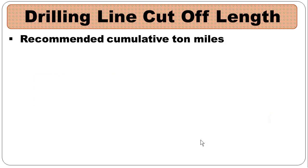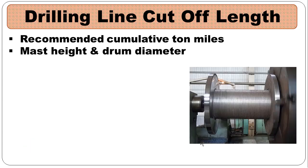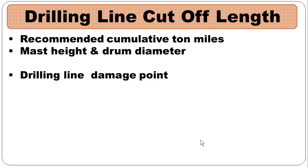We need to discard it for personnel and equipment safety. The drilling line is cut once the recommended cumulative ton miles is reached. The cutoff length for the drilling line is a function of mast height and drawworks drum diameter. In cases where the drilling line is damaged at any point, we need to cut the drilling line up to that point and discard it.